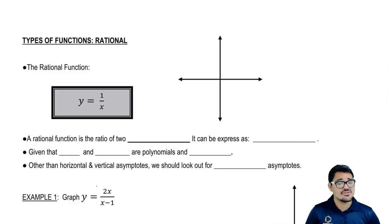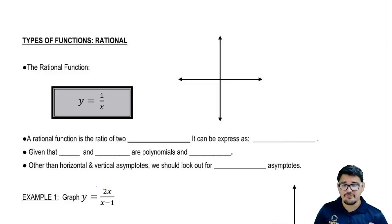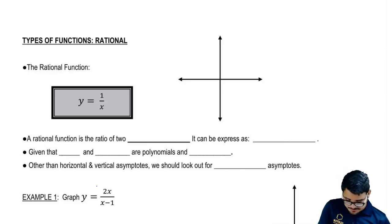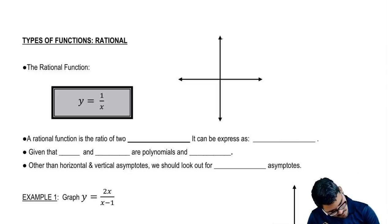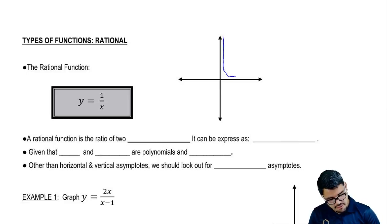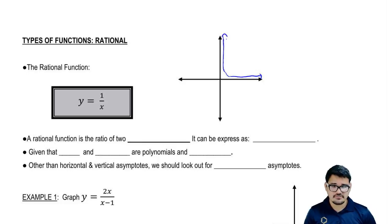Rational functions are very heavily focused on asymptotes. So I'm going to start out by first drawing out the function, and then I'm going to talk about how the asymptote affects its shape. I'm going to draw the function here in blue. I'm going to start off by bordering the y-axis, coming down in the first quadrant, and then bordering the x-axis right here, staying within the first quadrant.